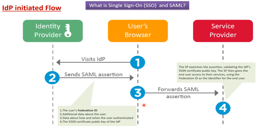In the third step, the user's browser forwards the SAML assertion to the service provider. In the fourth step, the service provider examines the SAML assertion and validates the IDP's X.509 certificate public key. If it is valid, the service provider gives the end user access to their services using the federation ID as the identifier for the end user.